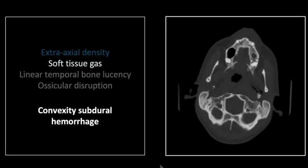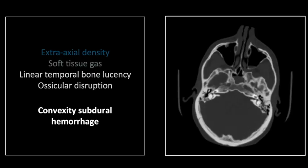The more important finding here is actually this one. There is soft tissue gas at the skull base, suggesting either a soft tissue laceration or a skull fracture with communication to the sinuses. There is a linear lucency, a hypodensity, in the petrous portion of the temporal bone. This is what's known as a longitudinal fracture along the long axis of the petrous portion of the temporal bone, as opposed to a transverse.